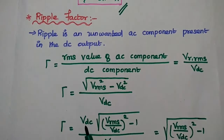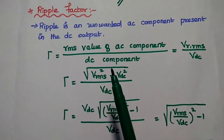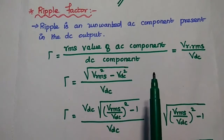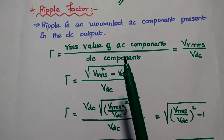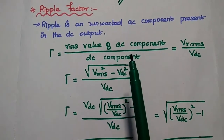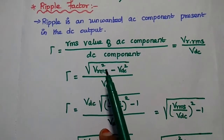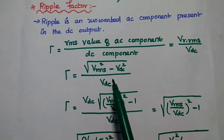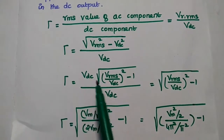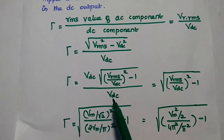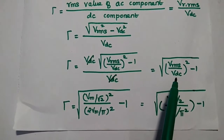Next we find the ripple factor. The ripple is an unwanted AC component present in the DC output. The ripple factor is defined as the ratio of the RMS value of the AC component to the DC component. The RMS value of the AC component in the output is given by square root of (Vrms² − Vdc²), divided by Vdc. For simplification, we take Vdc outside the square root, then substitute Vrms = Vm/√2 and Vdc = 2Vm/π.